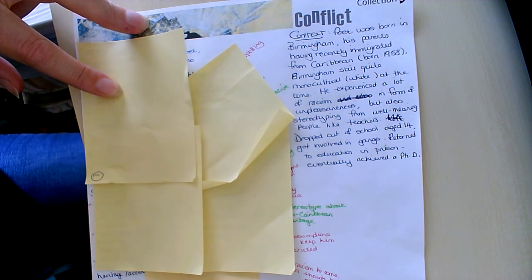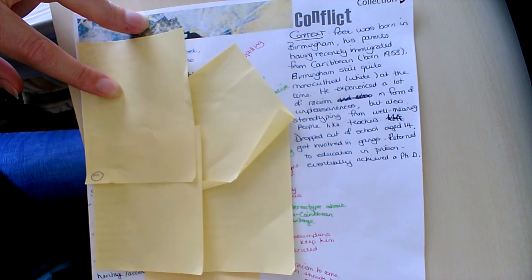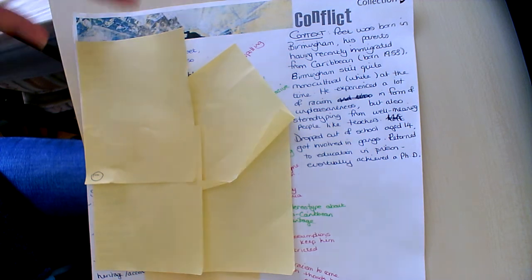Obviously that was a more perhaps obvious racism, unpleasantness, violence, nasty words, but also quite a lot of what you might call unconscious bias where people are well-meaning, they want to say helpful things, say the right thing, but they're guilty of stereotyping people like teachers.